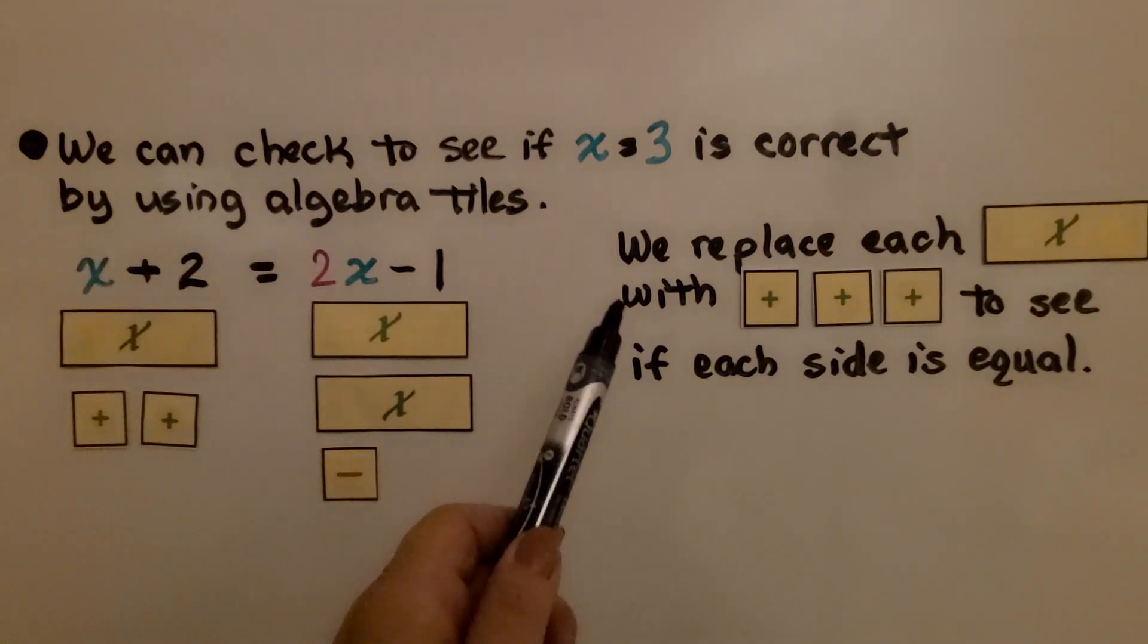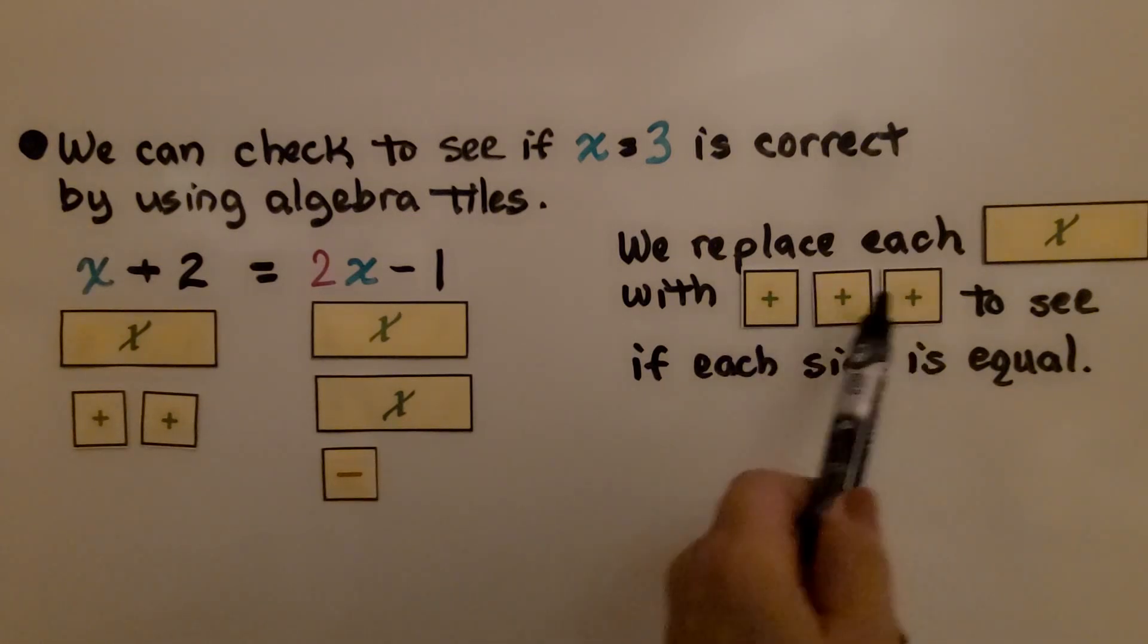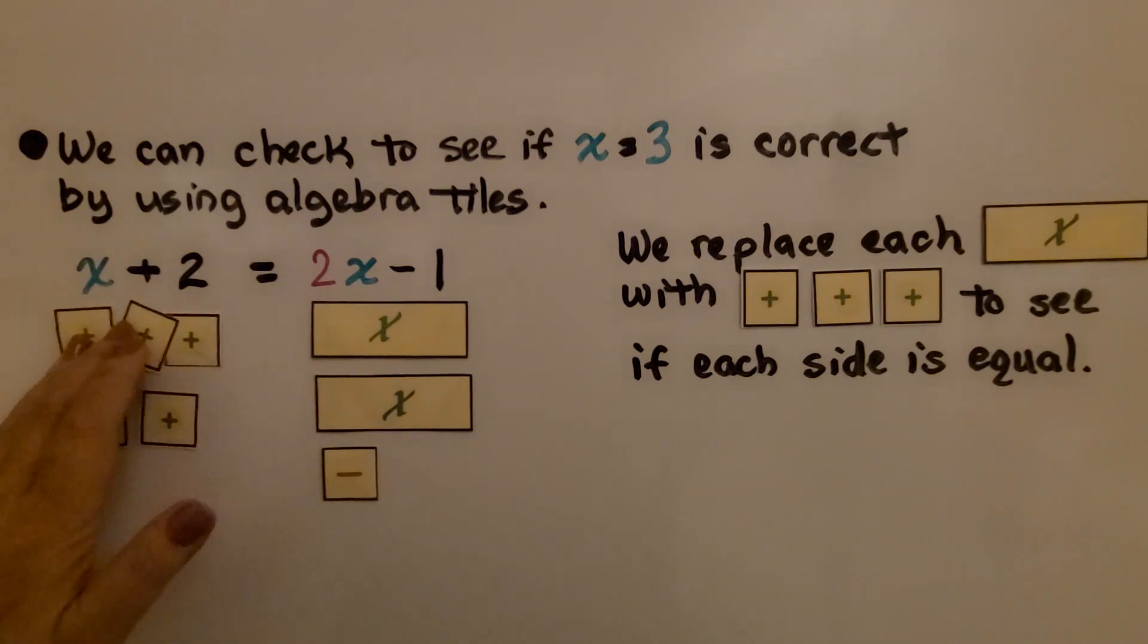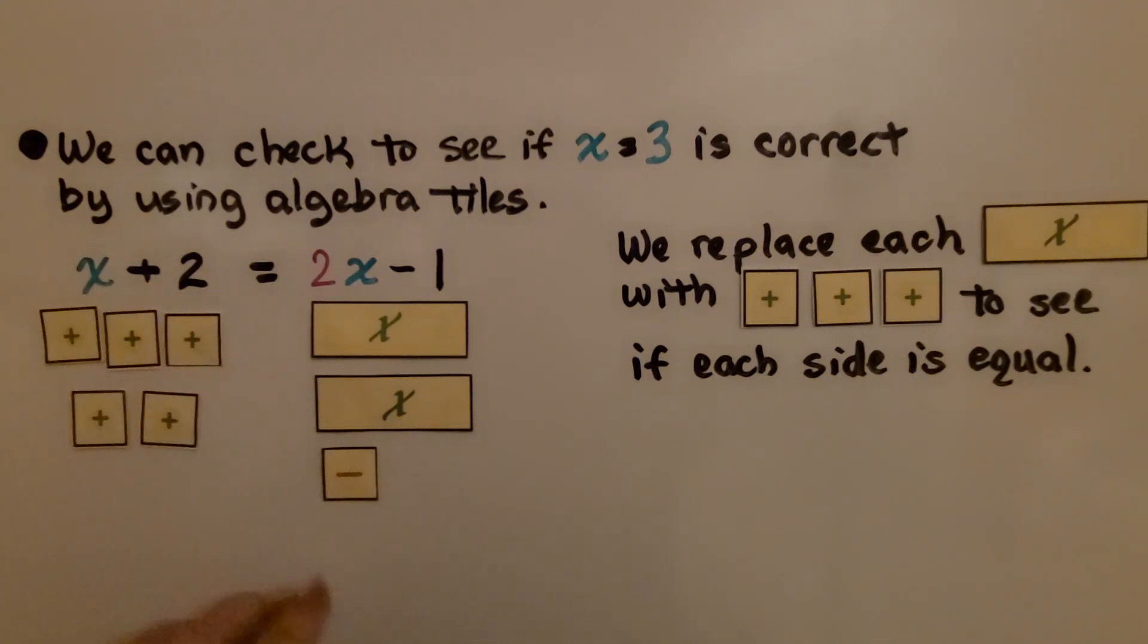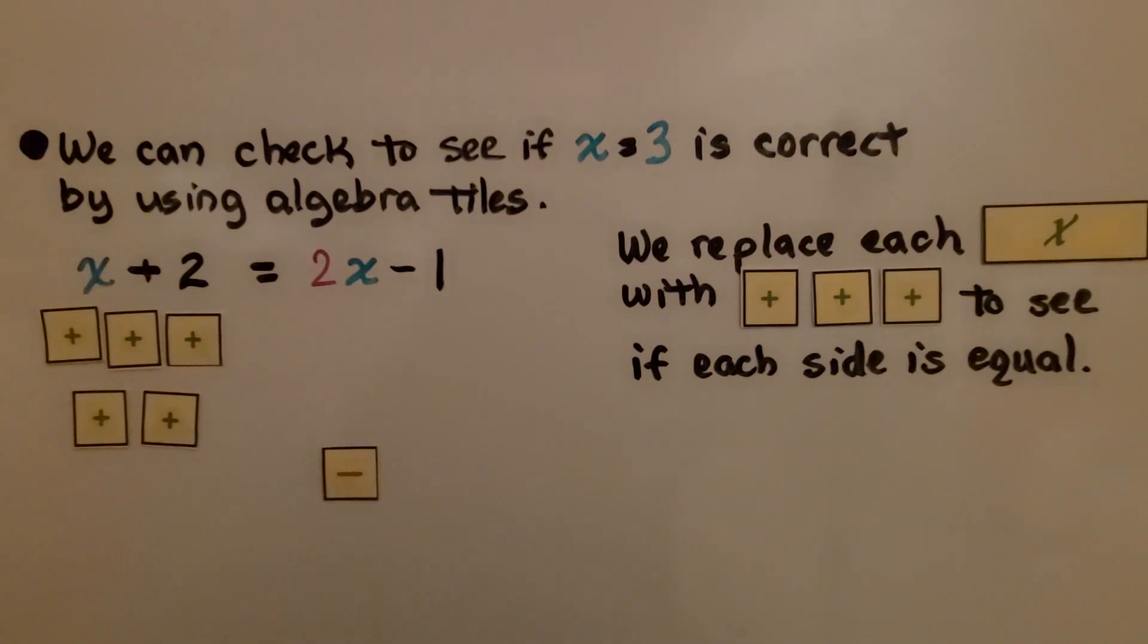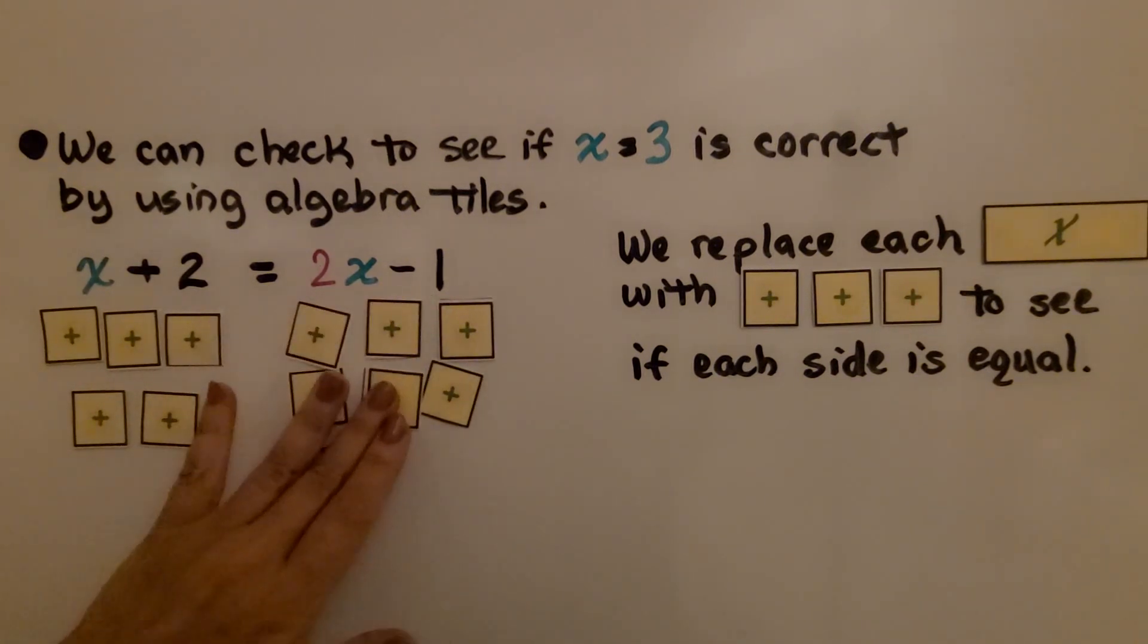What we do is replace each of these x tiles with 3 of the plus tiles to see if each side is equal. We take away this x tile and replace it with 3 of the plus tiles. We take away these 2 x tiles and replace them with plus tiles.